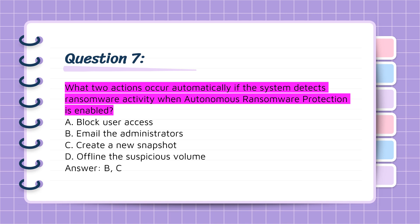Question 7: What two actions occur automatically if the system detects ransomware activity when autonomous ransomware protection is enabled? A. Block user access. B. Email the administrators. C. Create a new snapshot. D. Offline the suspicious volume. Answer: B, C.